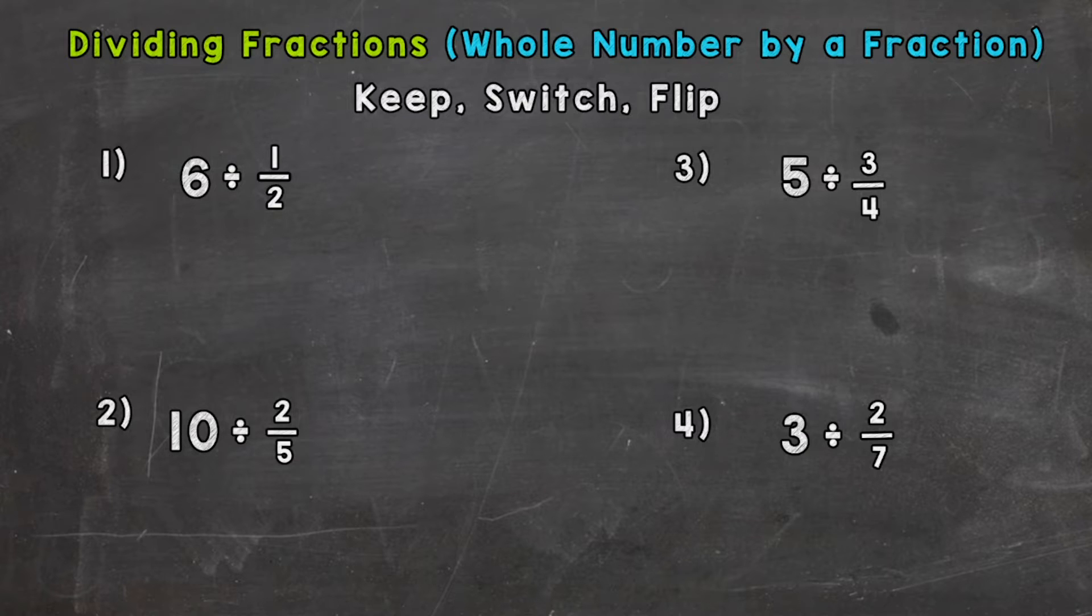In number one, we have 6 divided by 1/2. So we need to rewrite our problem with the three steps at the top of your screen in mind. The first step is Keep. We are going to keep this 6 as is. We're going to rewrite it as a fraction, but it's still going to have the value of 6. So we keep our 6, and in order to write a whole number as a fraction, you just put it over 1. It still has the same value,